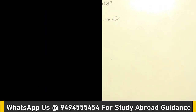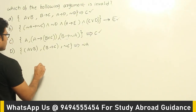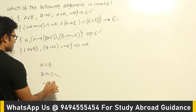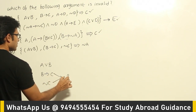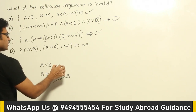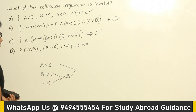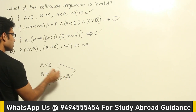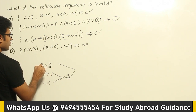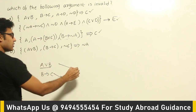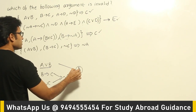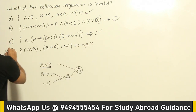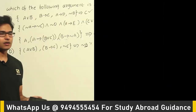Now let's see option D. The premises are A or B and negation C. From these two premises you can conclude negation B by modus tollens. Then by disjunctive syllogism on A or B with negation B, since B is false, A must be true — so the conclusion should be A. But they have given the conclusion as negation A, so this is definitely not valid. Option D is the invalid argument.